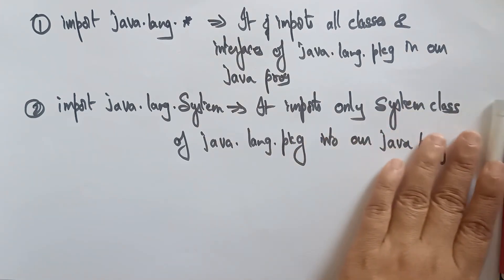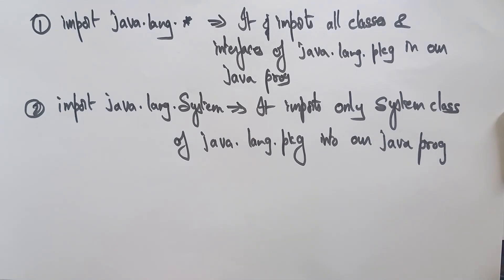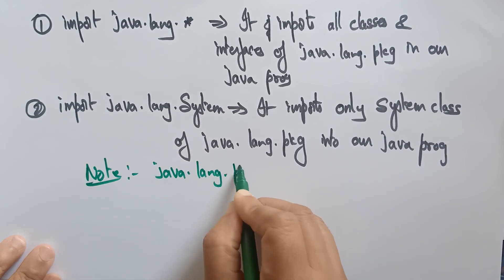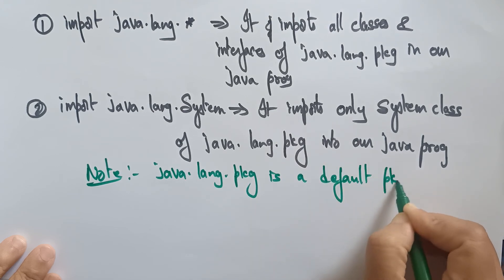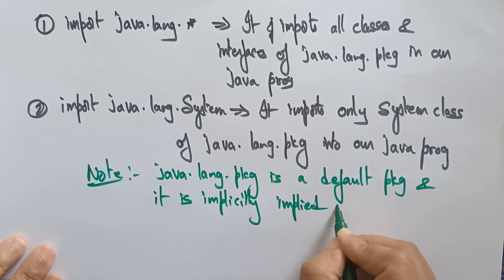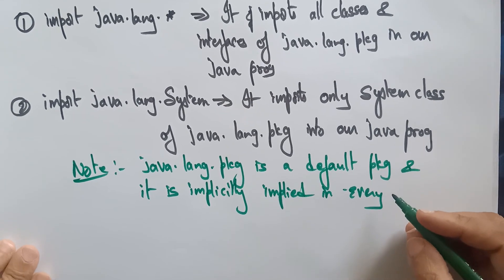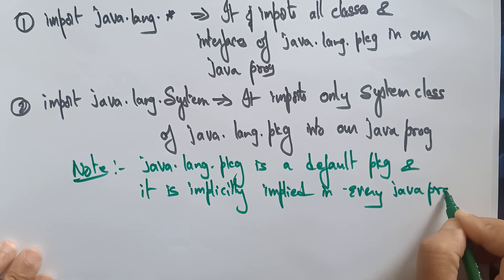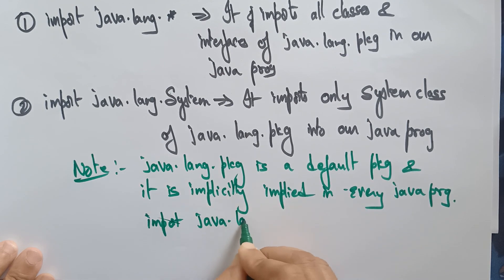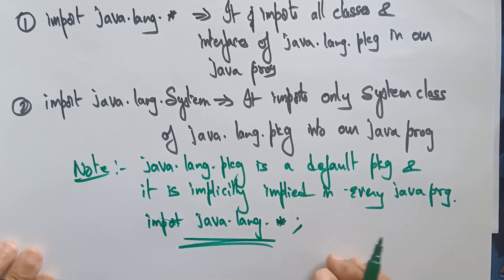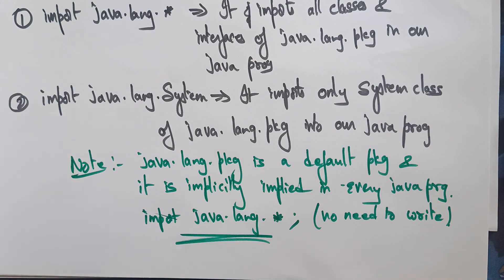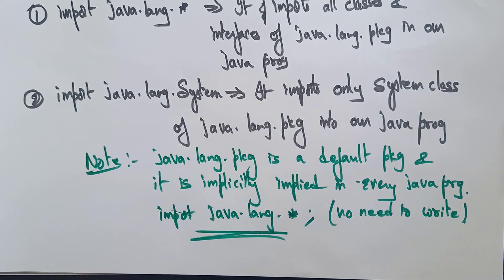When you are using normal classes and interfaces you don't need to call java.lang package explicitly, because it is a default package. java.lang package is a default package — it is implicitly implied in every Java program. No need to declare it or import it every time; it is implicitly included when you run the program. So every time you are not supposed to write import java.lang.* because it is implicitly imported by default in every Java program.